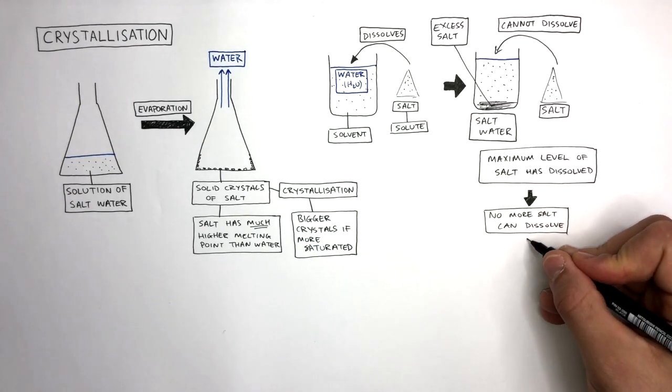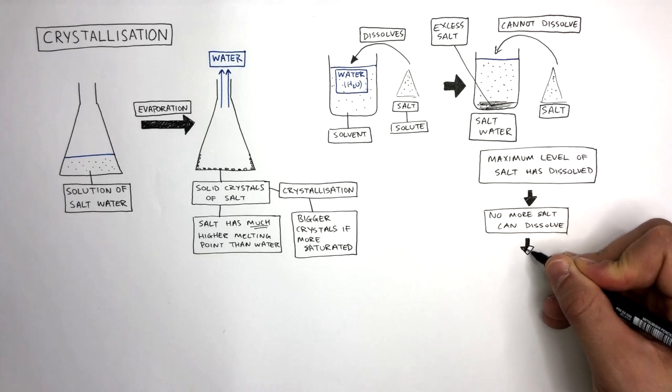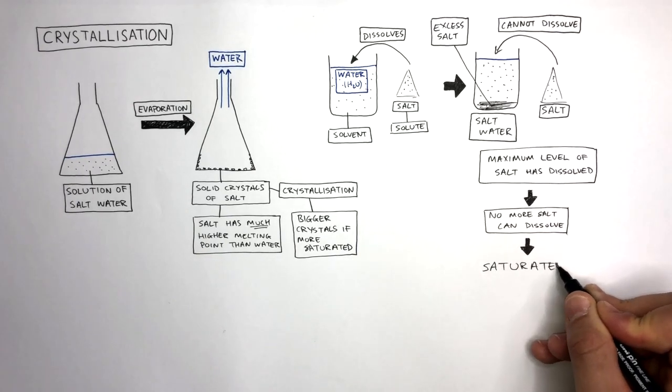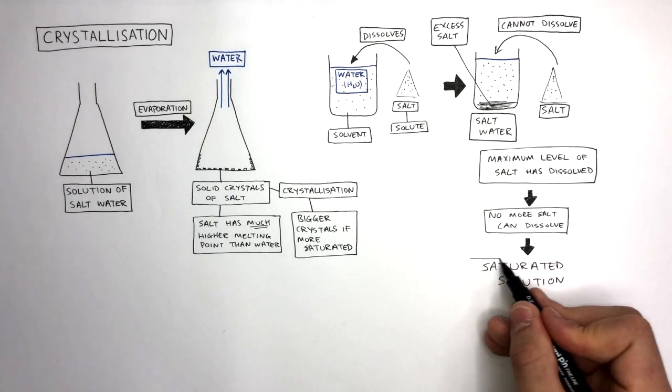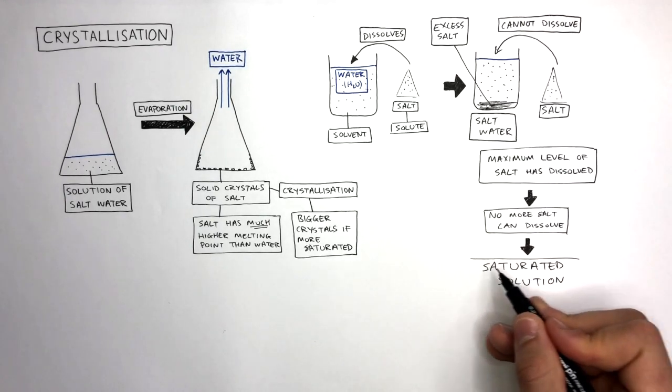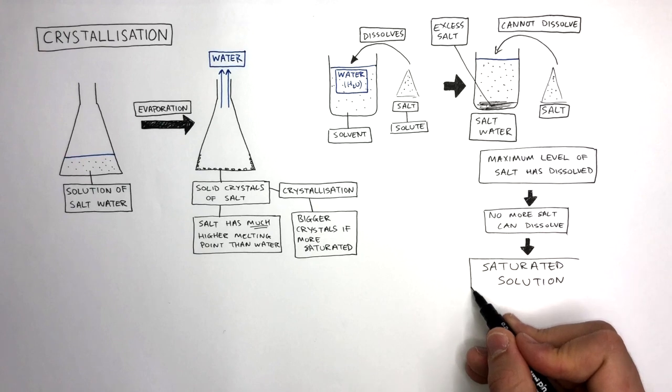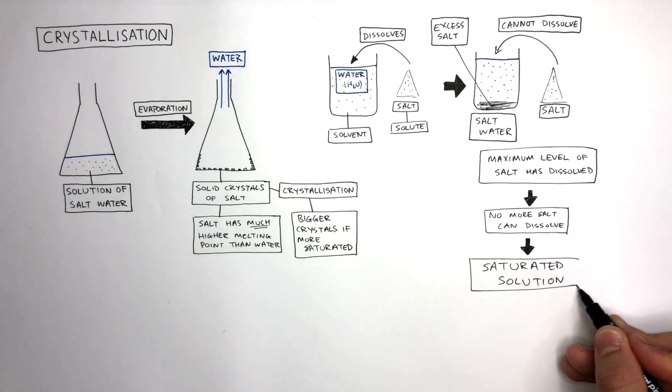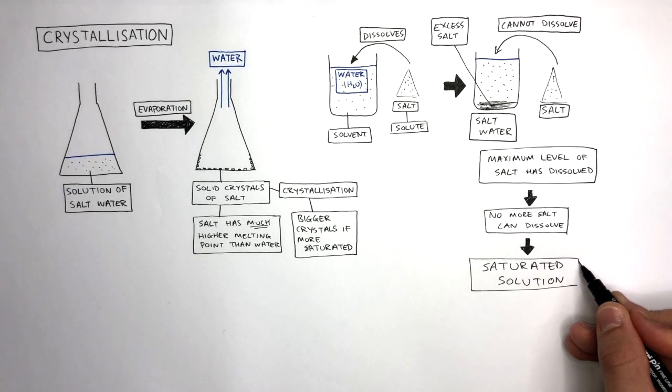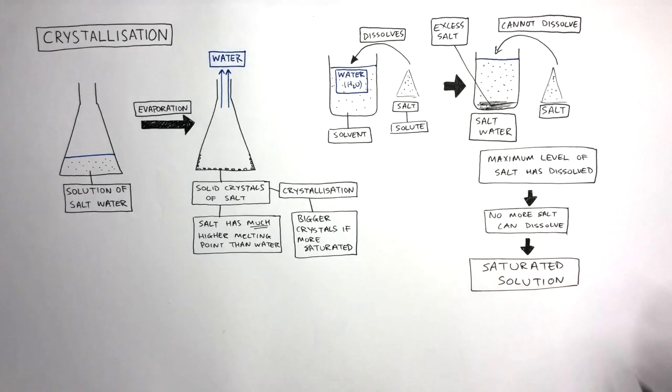Once you know the maximum mass of solute that can dissolve in that solvent, you have a saturated solution. So to summarize, a saturated solution is when no more solute can dissolve in that solvent. It is the maximum mass of solute that can dissolve in a particular solvent.